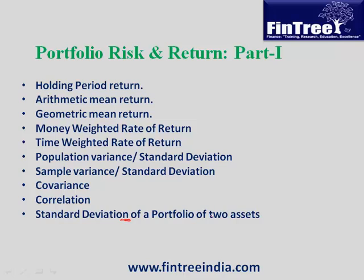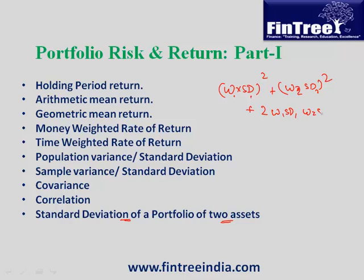Next is the standard deviation of a portfolio of two assets. The formula is: square root of [(w1 × σ1)² + (w2 × σ2)² + 2 × w1 × σ1 × w2 × σ2 × correlation coefficient].